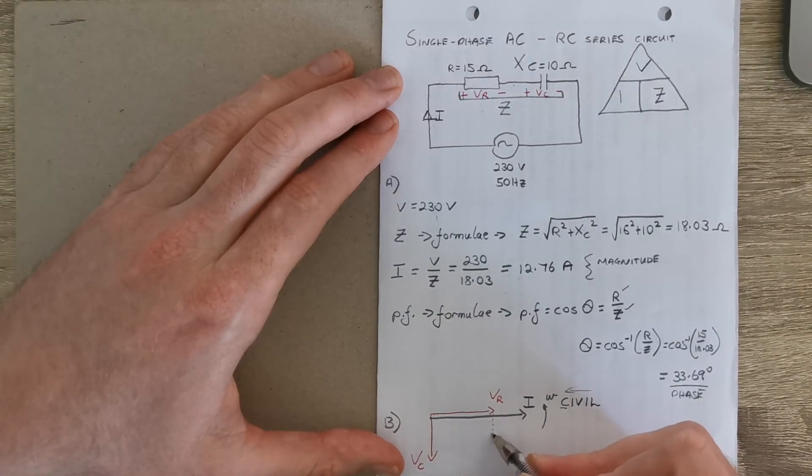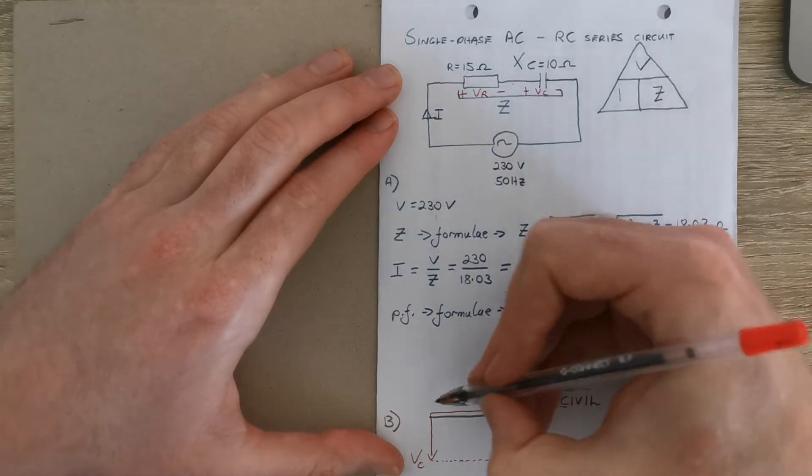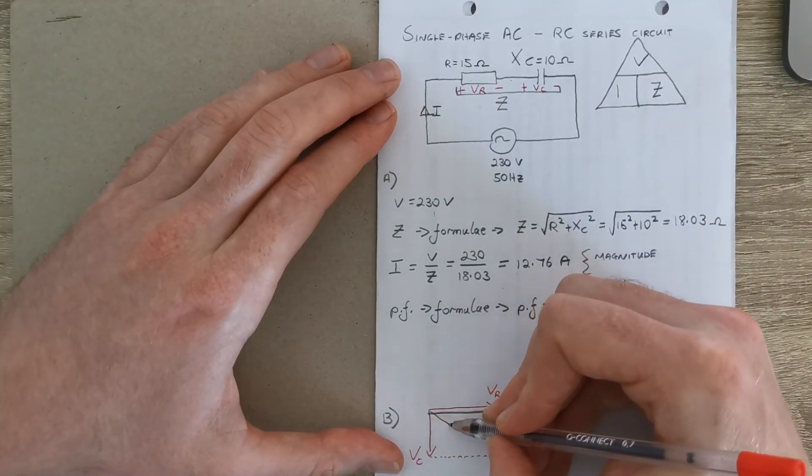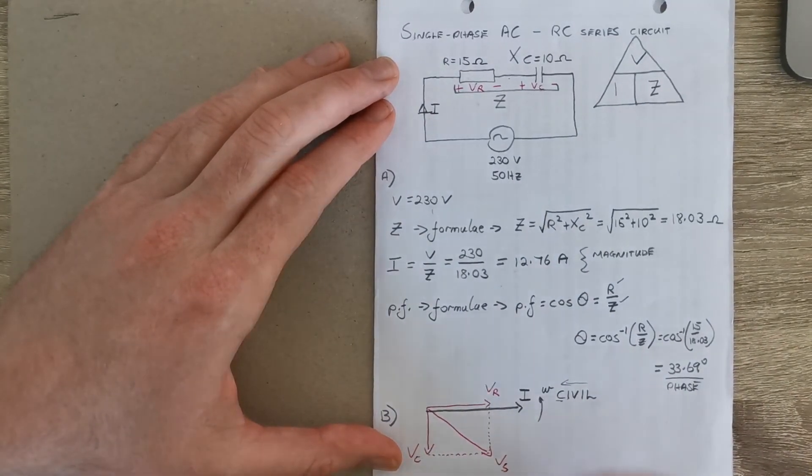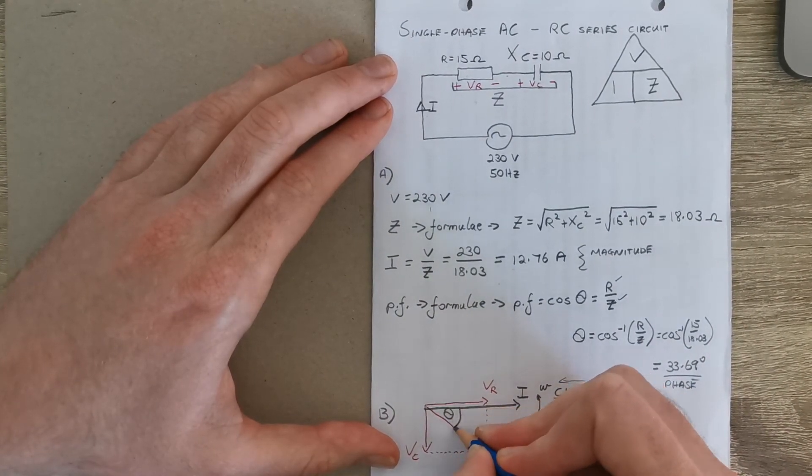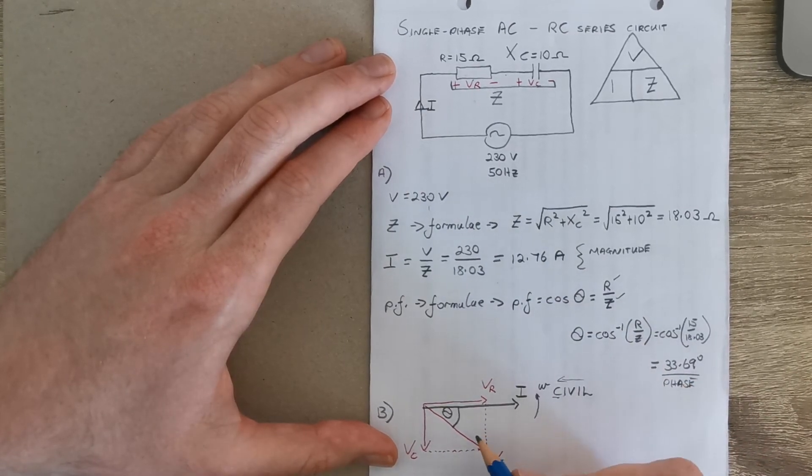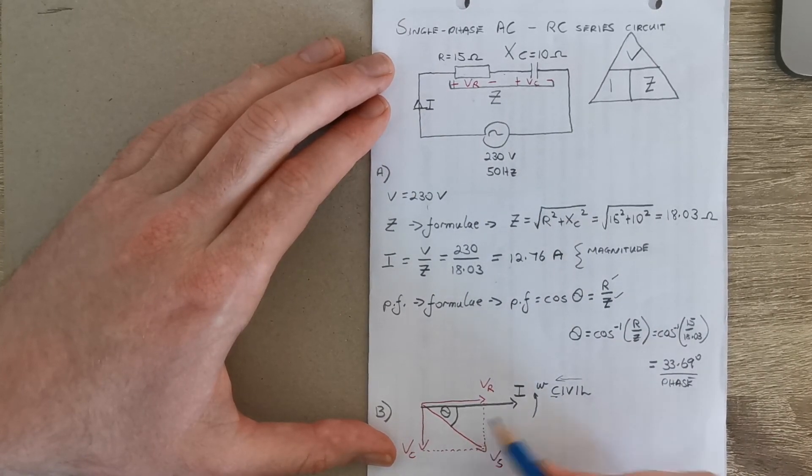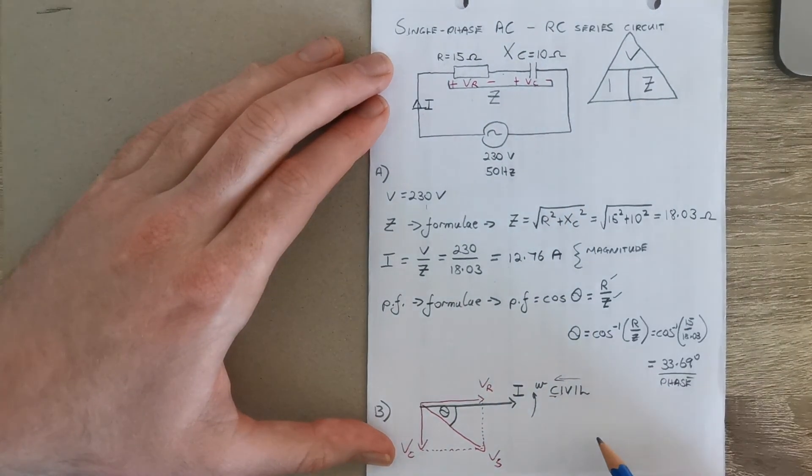Now the only one missing off this is our supply voltage, which we get by completing the rectangle or parallelogram if you've heard that before. So VS will be here, and this angle between I and VS, theta, is this phase angle here. Now notice that it's ahead of the voltage, it's leading, so it's leading because we have a capacitor in this circuit.